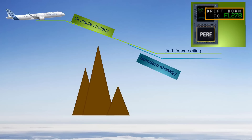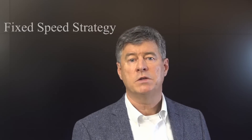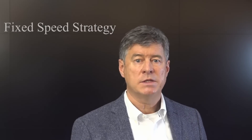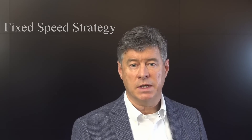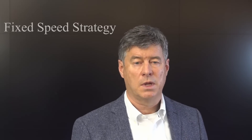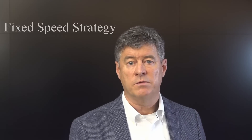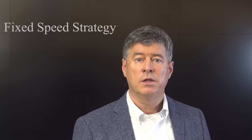Once the descent path is clear of obstacles, you can apply the standard descent strategy. If you encounter an engine failure during an ETOPS flight, you should select the ETOPS diversion speed. Your airline's operating manual provides this data based on your ETOPS approval. This ETOPS diversion strategy is referred to as the fixed speed strategy in Airbus documentation. The selection of the one-engine inoperative diversion speed affects the diversion distance, the fuel consumption, and the obstacle clearance.